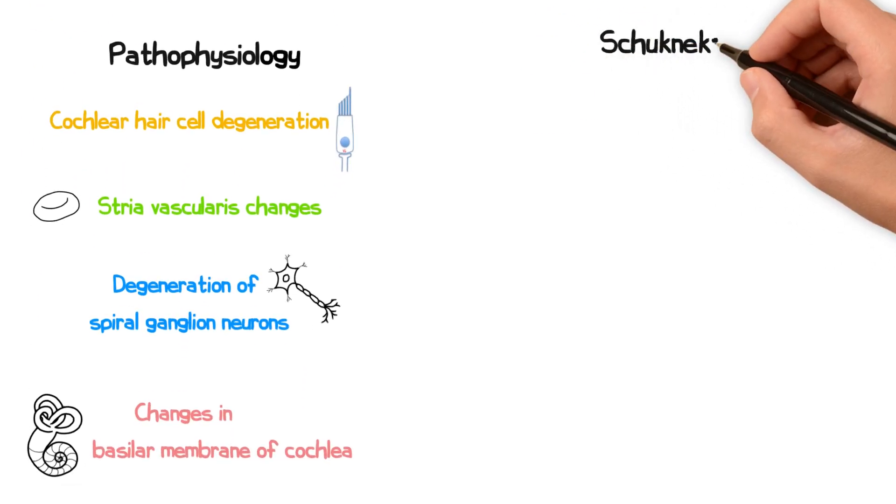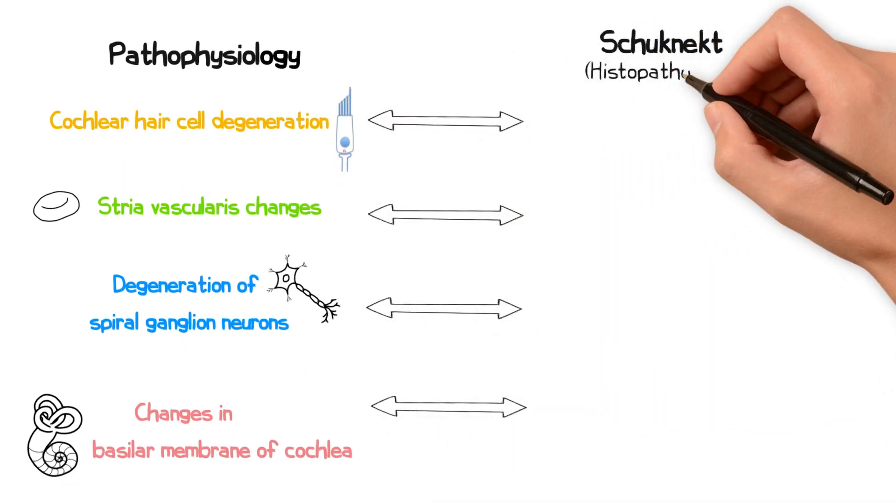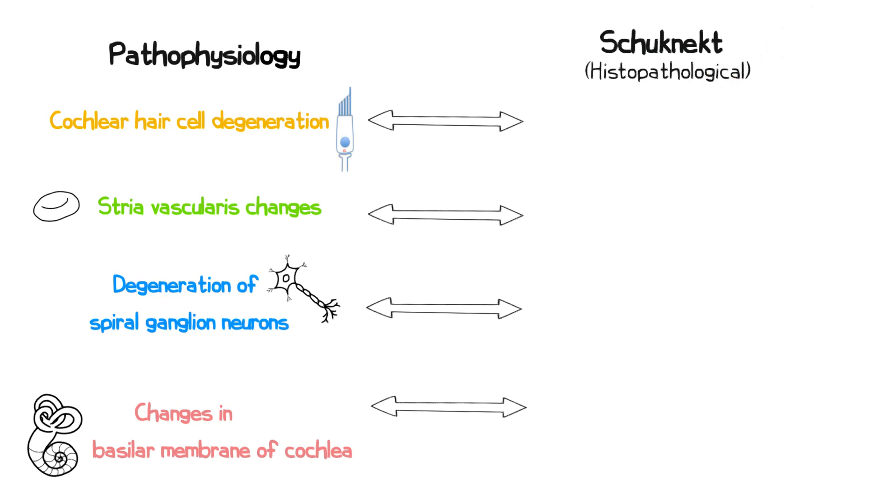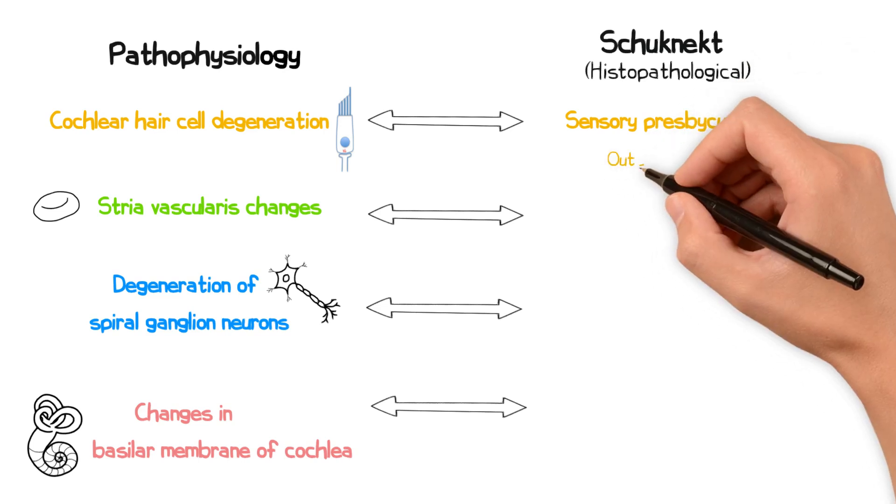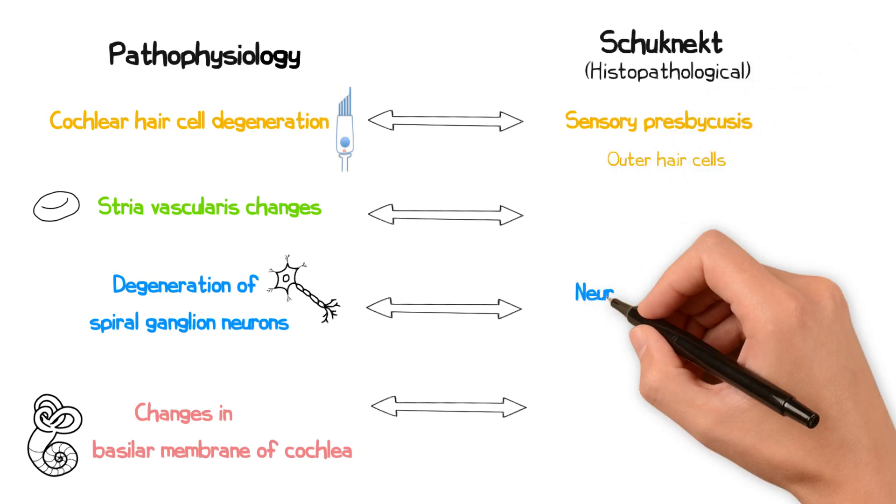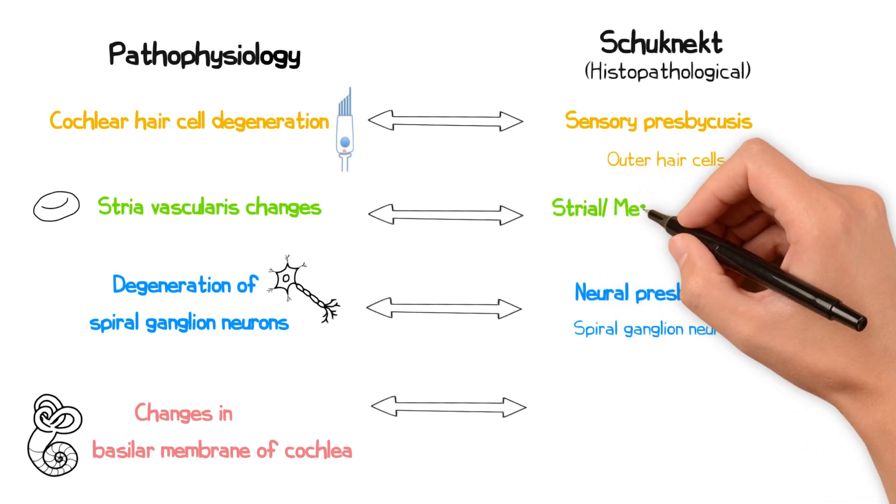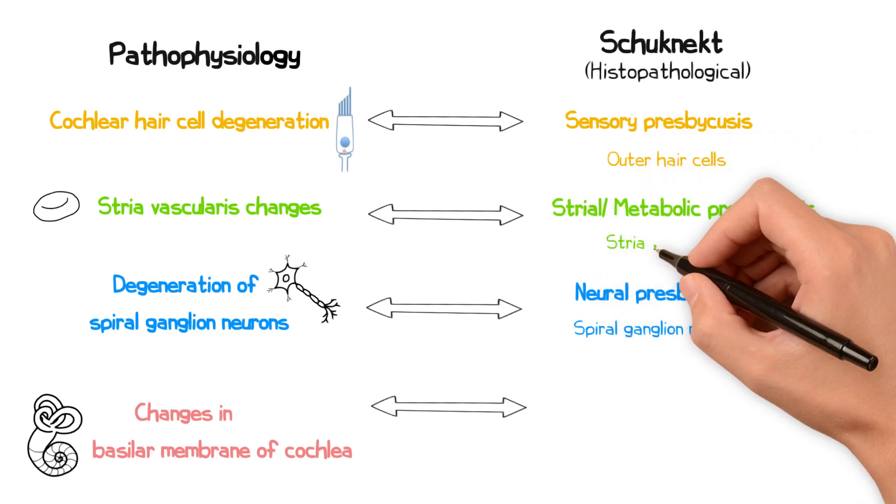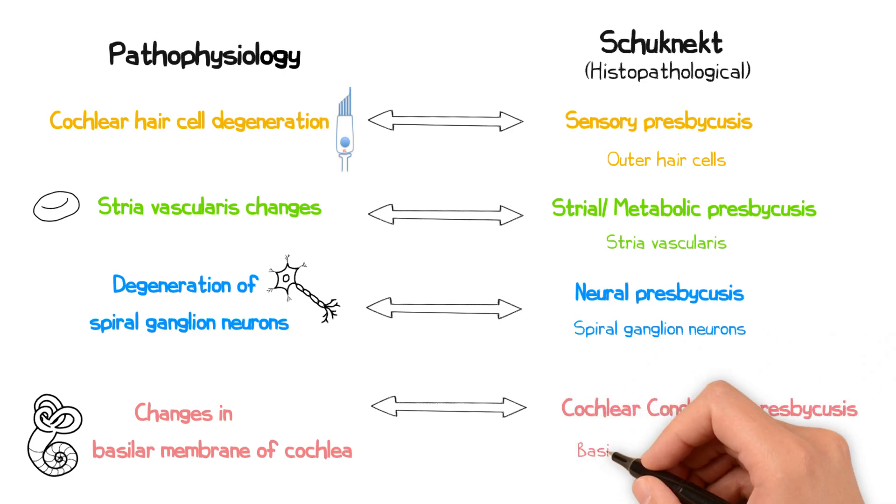Harold Schuknecht classified presbyacusis into four different distinct types based on histopathological findings. Each type reflects damage in different parts of the auditory system. These include sensory presbyacusis affecting the outer hair cells, neural presbyacusis affecting the spiral ganglion neurons, strial or metabolic presbyacusis affecting the stria vascularis, and cochlear conductive presbyacusis affecting the basilar membrane of the cochlear duct.